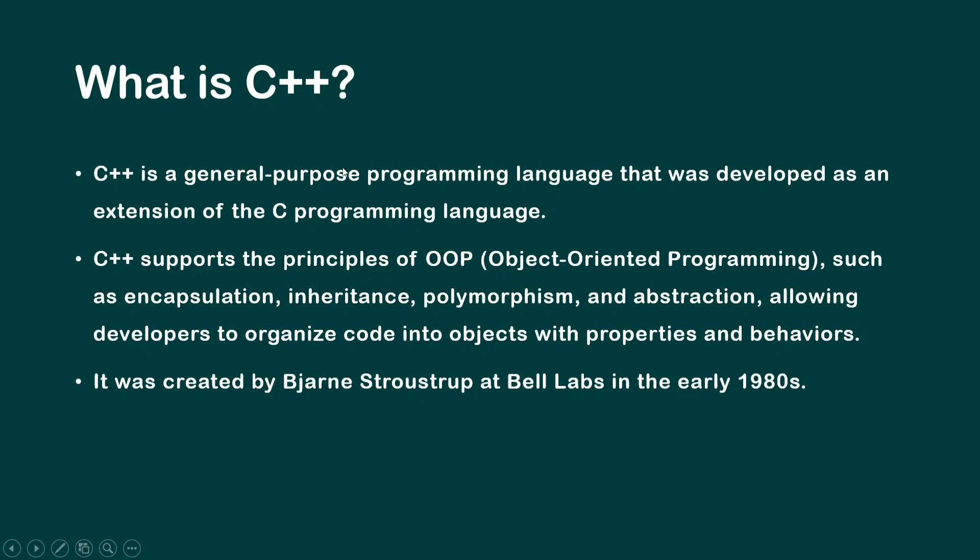It was created by Bjarne Stroustrup at Bell Labs in the early 1980s. C++ is a general purpose programming language. General purpose means things that are used for general needs. C++ is general purpose because it's used for building the general softwares that are around us — like a general store where we get day-to-day needed things.